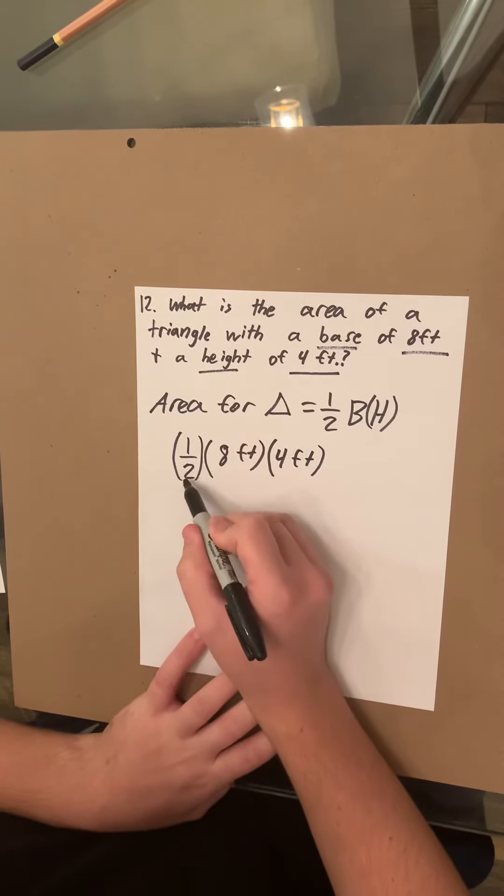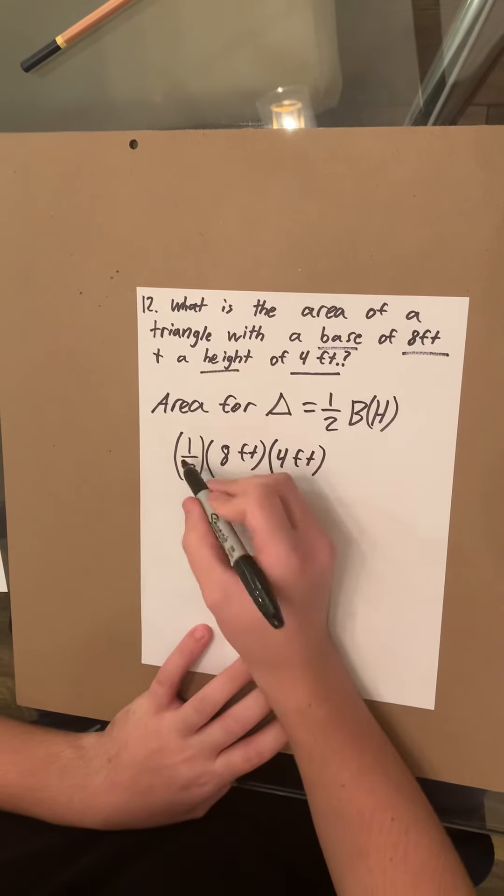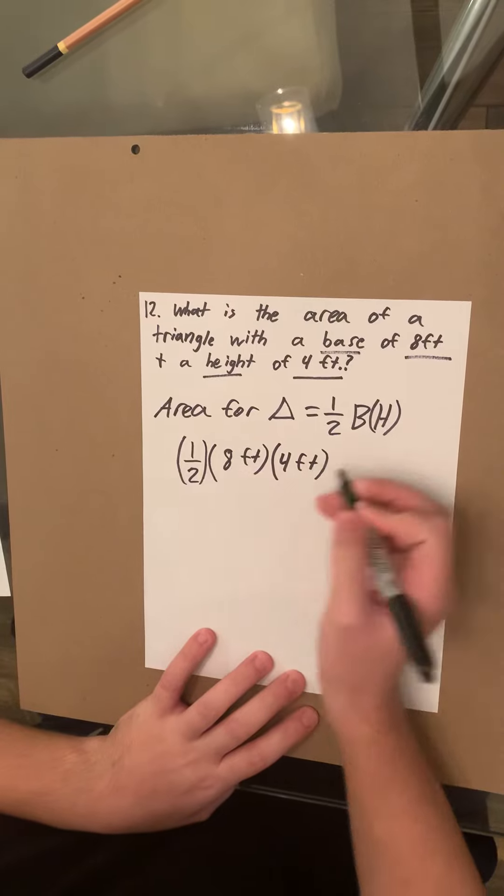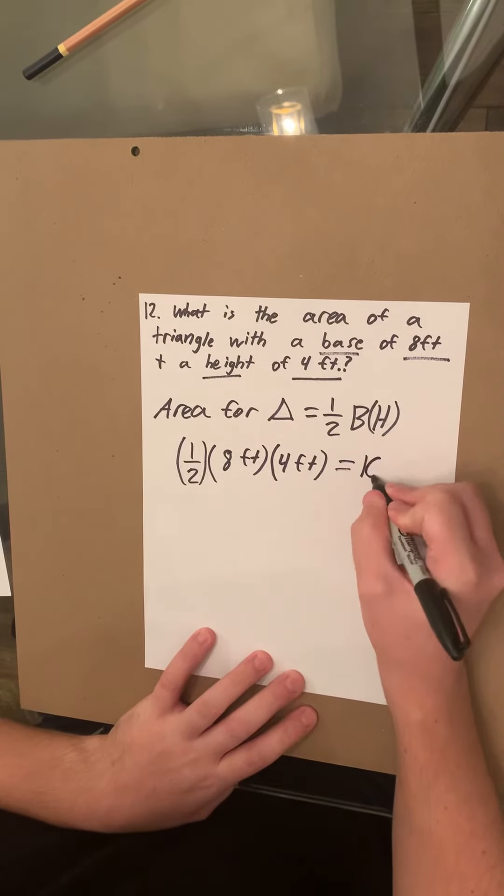So, half is the same as just dividing something by 2. So, half times 8 is 4, times 4 equals 16.